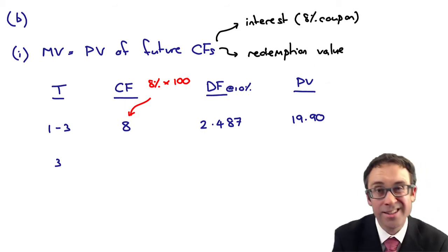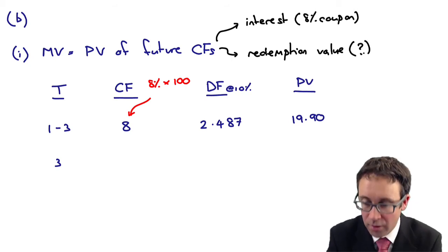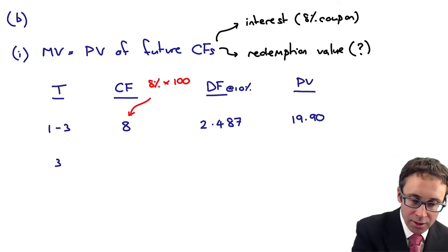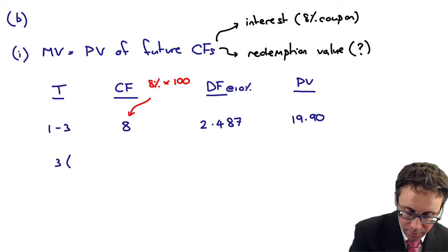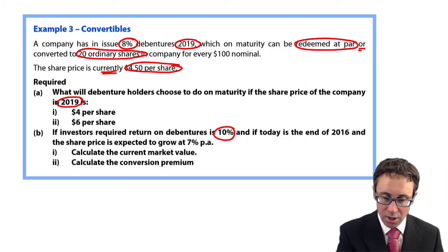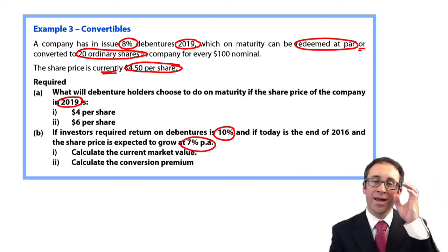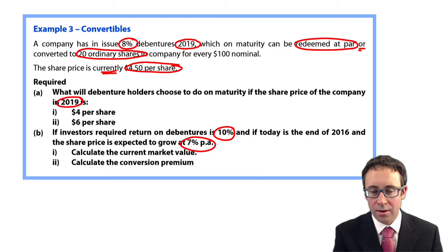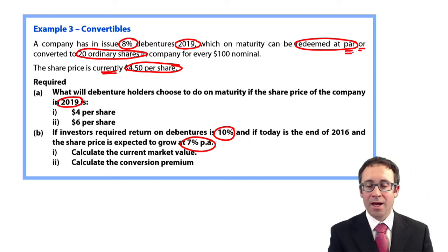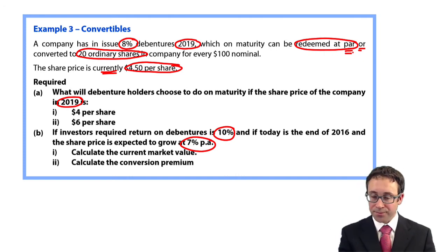So that's the present value of the interest. So you've got the future cash flows, the interest which is based upon the 8% coupon, and the redemption value. However, the issue that we have is it's a convertible, so we don't know what the redemption value is. It depends upon what the value of the shares are.